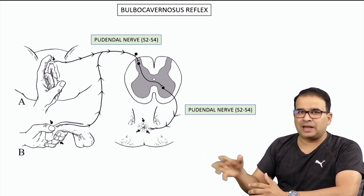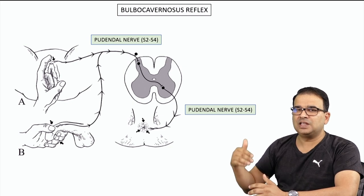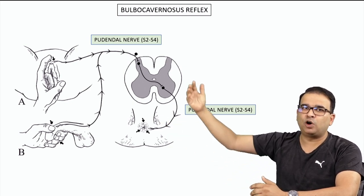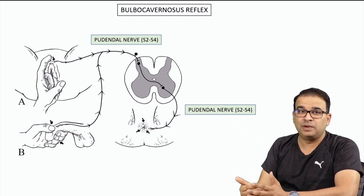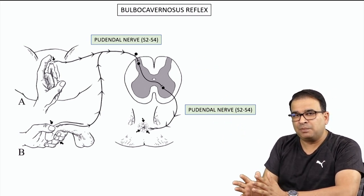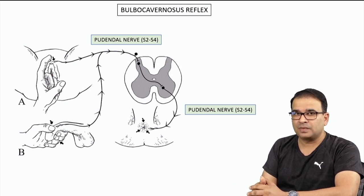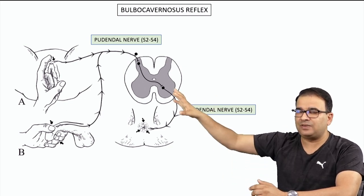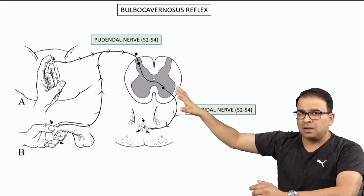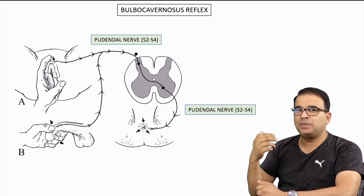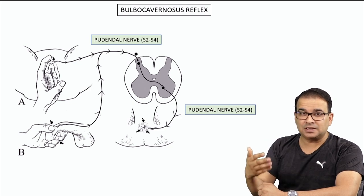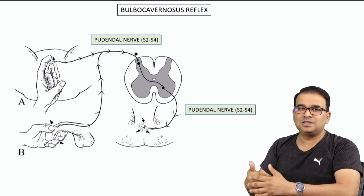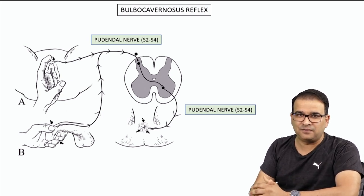In cauda equina syndrome, the nerve is involved, so the innervation to the external anal sphincter and the sensory input going to the dorsal horn will be lost — resulting in an absent bulbocavernous reflex. In conus medullaris syndrome, this reflex will initially be absent because of spinal shock. But return of the bulbocavernous reflex is an indication that the spinal cord has recovered from spinal shock.